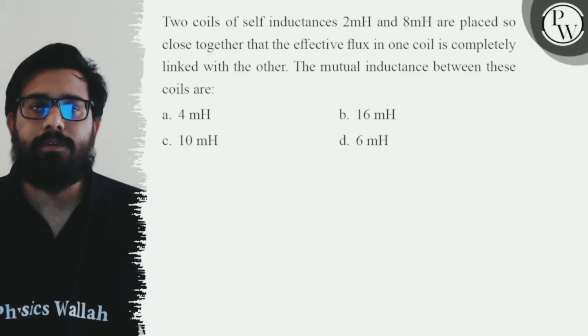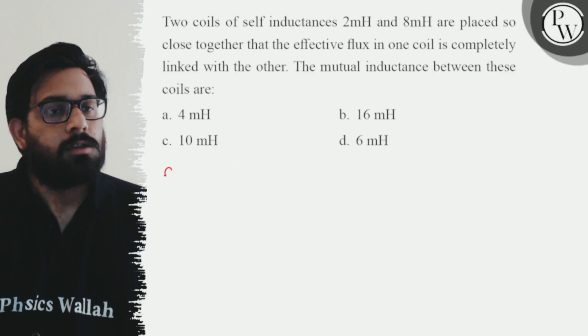The mutual inductance between these coils are: the first option is 4 mH, the second option is 16 mH, the third option is 10 mH, and the fourth option is 6 mH.